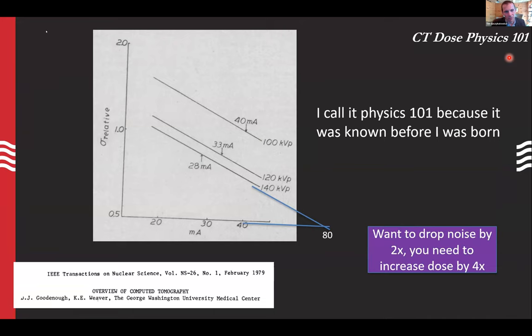This is CT 101. It's been known since before I was born that this fundamental relationship exists, due to the way we reconstruct images in computed tomography. It's important to understand because we're going to have more than factors of two differences in image noise between our screening protocols and our routine protocols, and then up to our higher dose, high image quality needs, like a spine protocol or a cancer follow-up protocol.